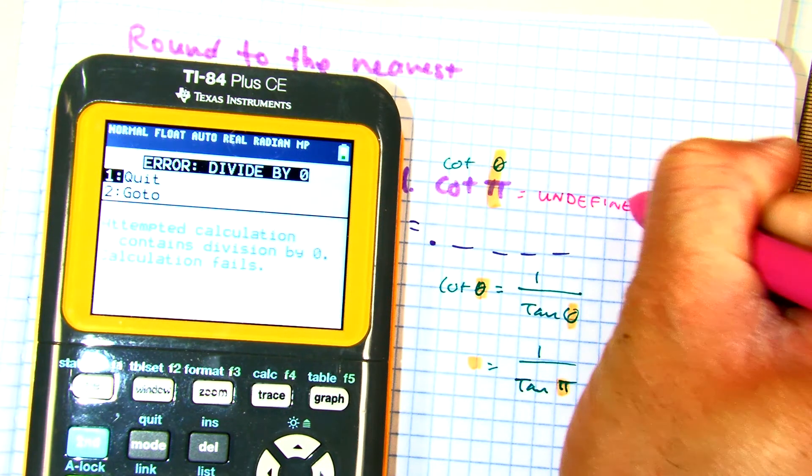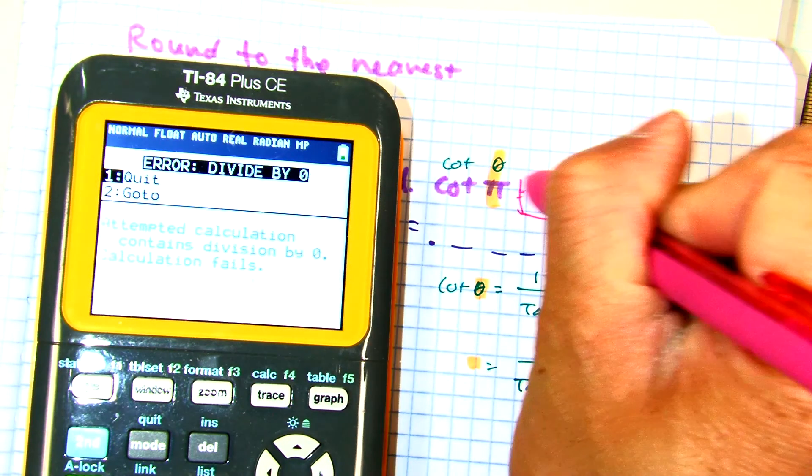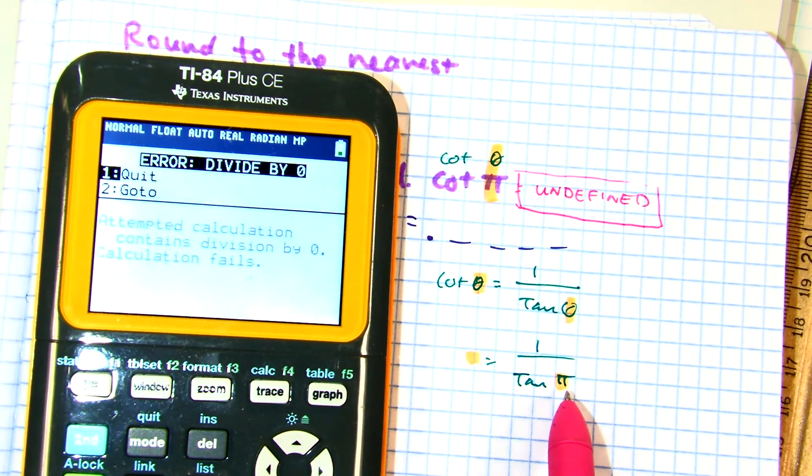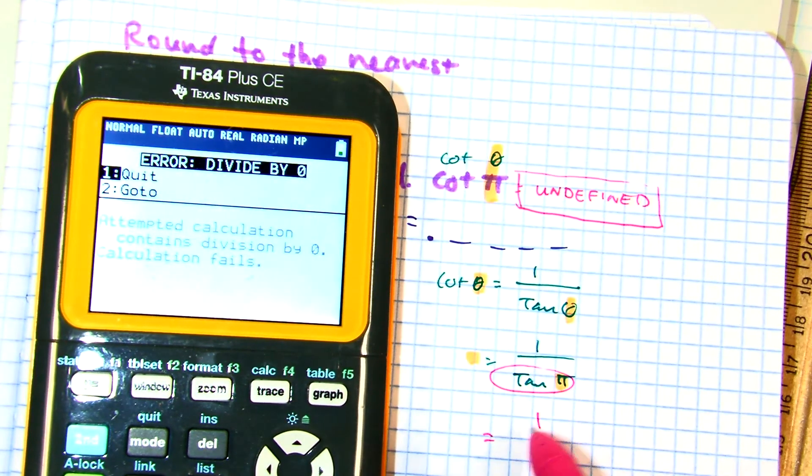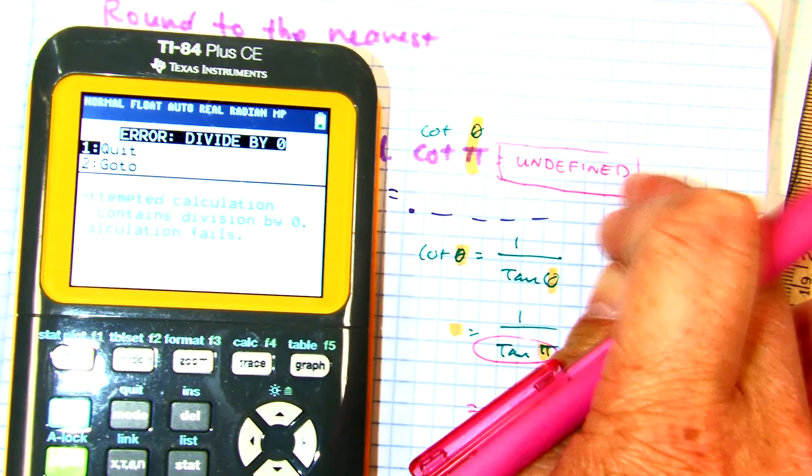Now, what does that mean? Tangent at pi. What do you think it will be? It's zero. And one divided by zero is? Undefined. Right? Not zero.